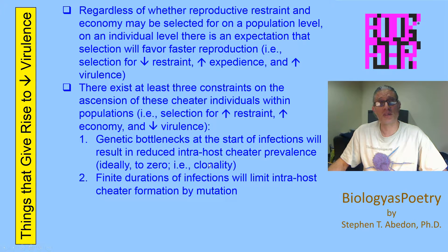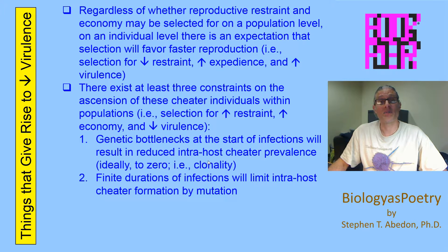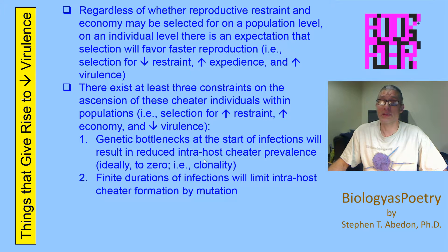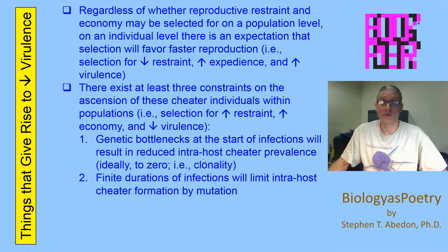Finite durations of infections can be important as well, because a way in which virulence can enter populations is through mutations, and the greater the number of individuals making up a population and the longer the population persists over time, the more mutations that have the potential to enter that population. If you don't have those mutations entering the population, you maintain a lack of genetic variation, which can result in a lack of evolution of reduced restraint. But if you allow the population to last for long periods and consist of very large numbers of individuals, you start exploring sequence space fairly effectively, and genetic variation in terms of differences in virulence can enter the population, resulting in selection on virulence within populations infecting individual hosts.